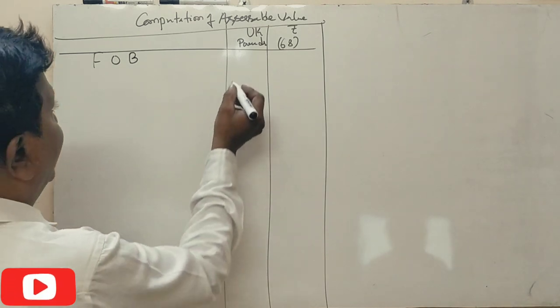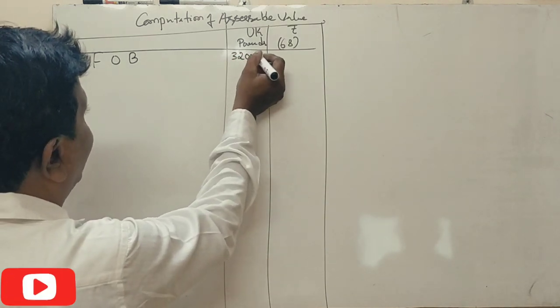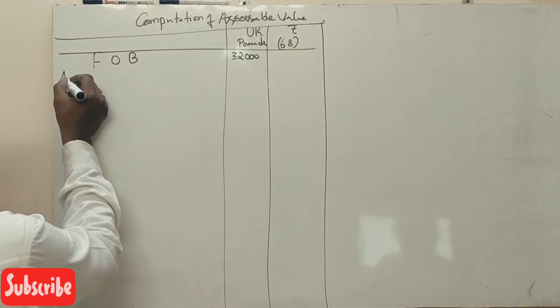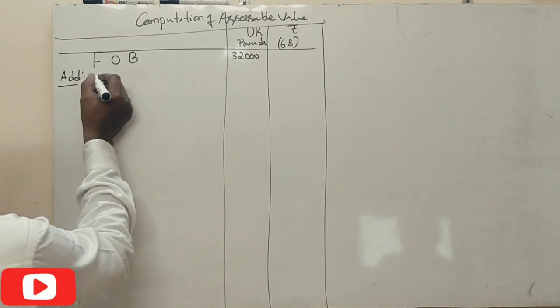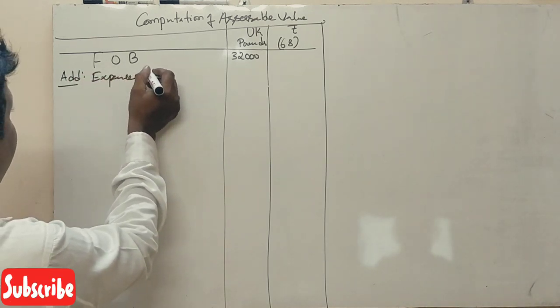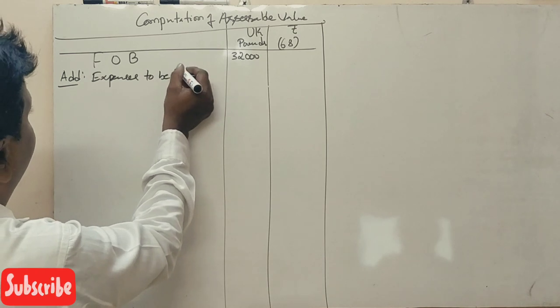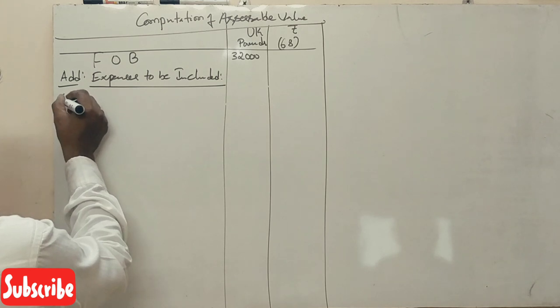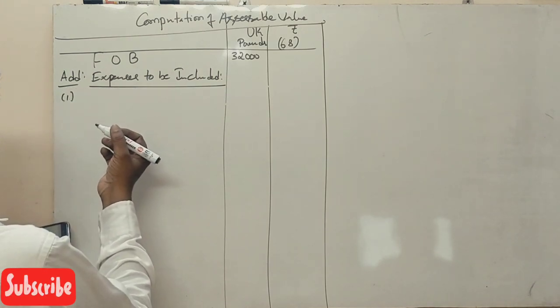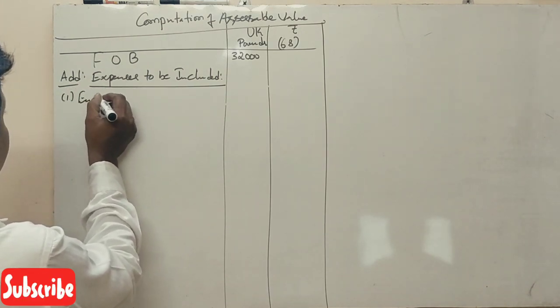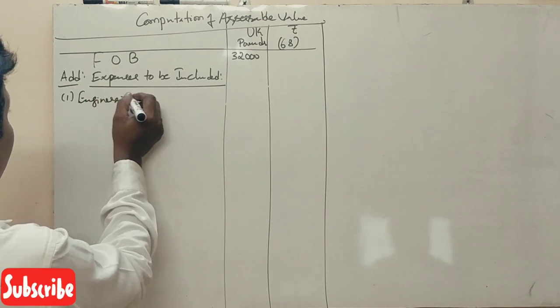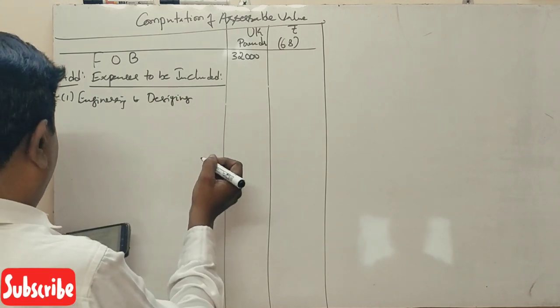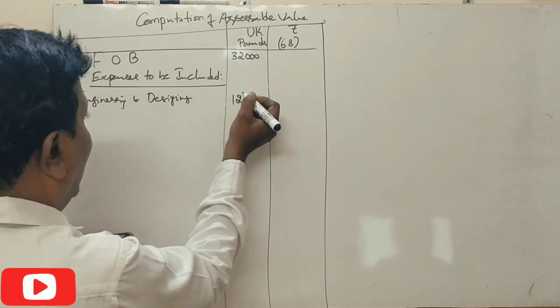FOB is 32,000 pounds. Calculate. Expenses to be included: engineering and designing charges, 12,000 pounds, to be included.